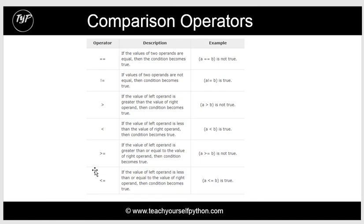Comparison operators are very useful. If you're searching for equivalents — say you're looking to see if a password is what you want it to be — you might use a double equal sign, for instance is A equal to B. You might use a greater than sign to check for something, or a greater than or equal to sign if you're looking for something more precise.